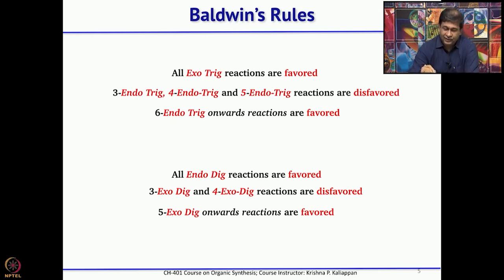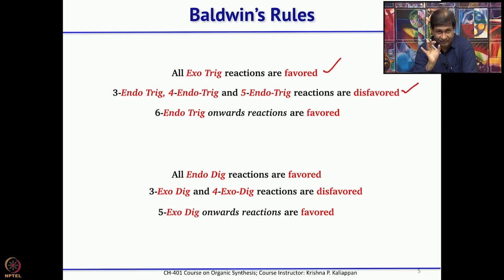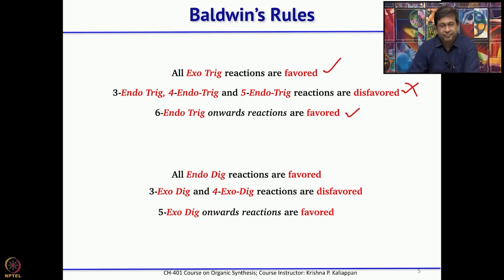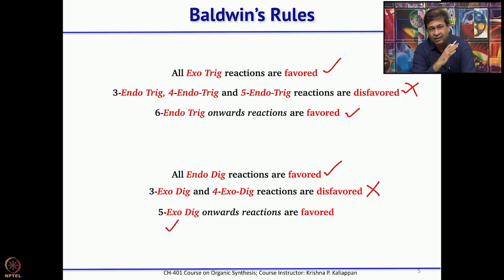According to Baldwin's rules, all exo-trig reactions are allowed or favored. What is not favored is 3-endo, 4-endo, and 5-endo-trig — these are not favored when you have a double bond and carry out radical cyclization. The first ring size where endo is favored is 6-endo; only 6-endo-trig is favored. For sp carbon atoms it is exactly opposite to trig: all endo-dig reactions are favored, but 3-exo and 4-exo-dig are not favored. Only from 5-exo-dig onwards are all exo-dig reactions favored.